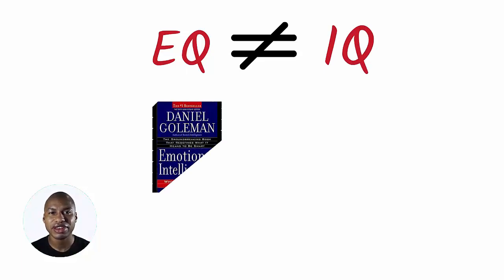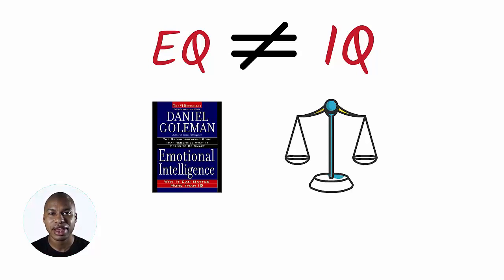The EQ was popularized by Daniel Goleman in 1995 by his book Emotional Intelligence. To be a great leader, it is important to be balanced between the IQ and the EQ.